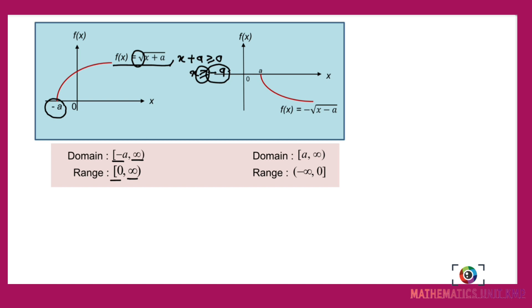For the fourth graph, f(x) equals negative √(x minus a), where x minus a is greater than or equal to 0, so x is greater than or equal to a. The graph starts at a, goes to the right and downward. The domain is from a to infinity and the range is from negative infinity to 0.